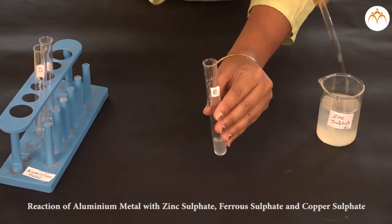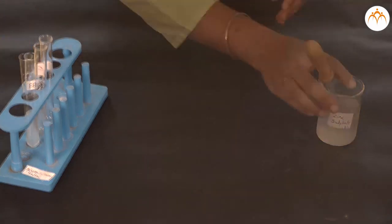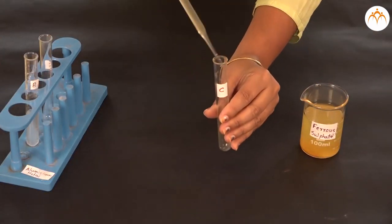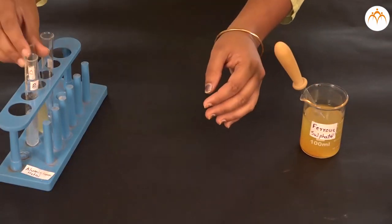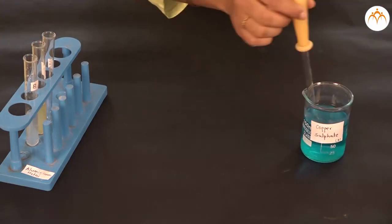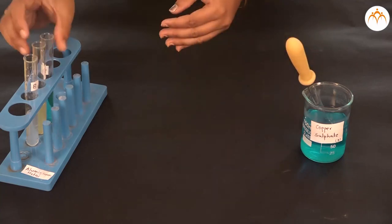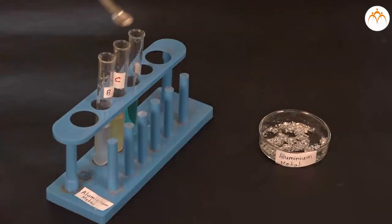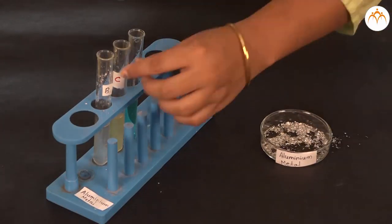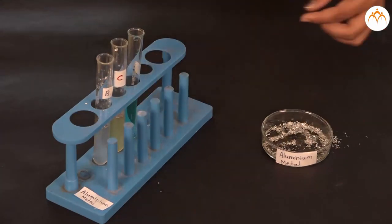Part A: Let us first perform the reactions for the metal aluminum. As aluminum metal cannot react with its own salt, we are going to take the other three salt solutions in test tubes. Add aluminum metal to all three test tubes and observe the reactions.